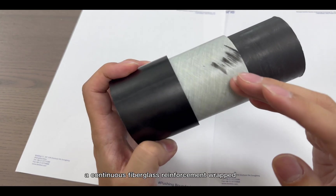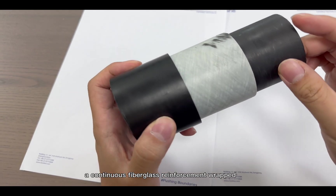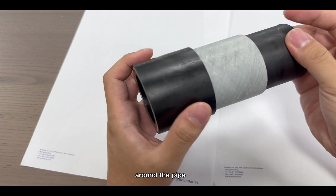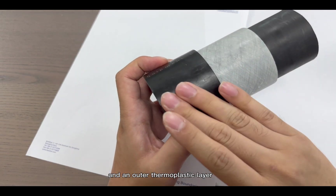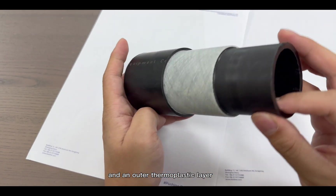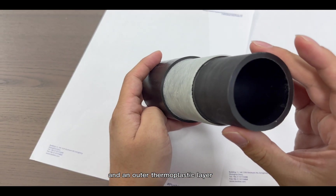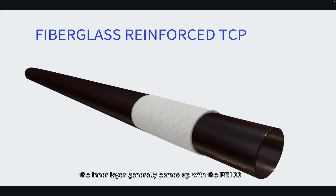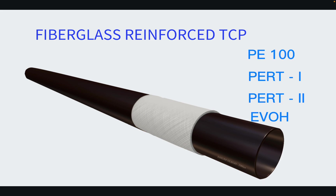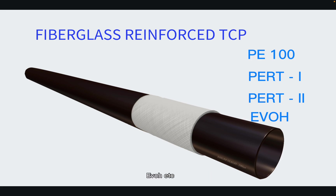TCP pipe comes with three basic layers: an inner thermoplastic layer, a continuous fiberglass reinforcement wrapped around the pipe, and an outer thermoplastic layer. The inner layer generally uses PE100, but can also apply PERT Type 1, PERT Type 2, EVOH, etc.